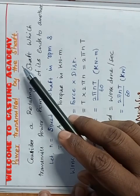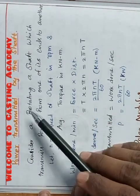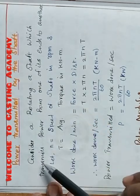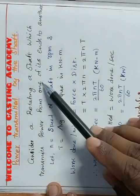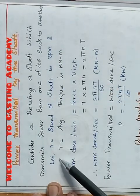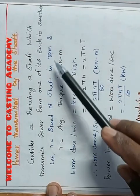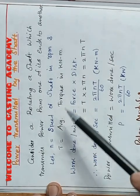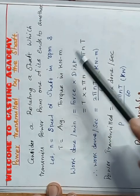Power transmitted by the shaft. Consider a rotating shaft which transmits power from one of its ends to another. Let N equal the speed of the shaft in RPM. T equals average torque in kNm.